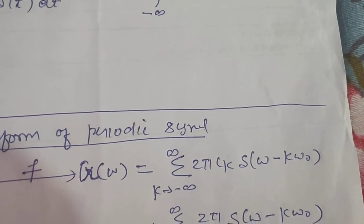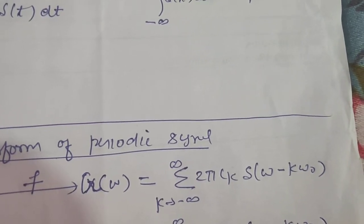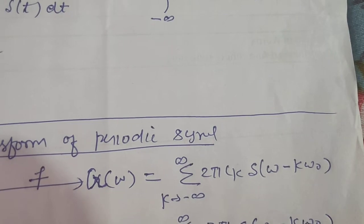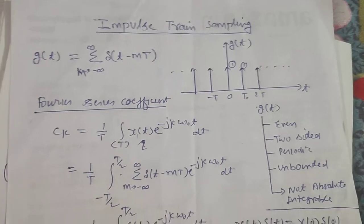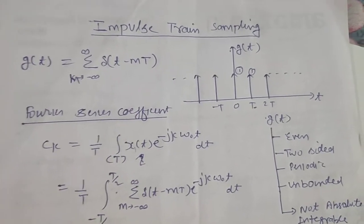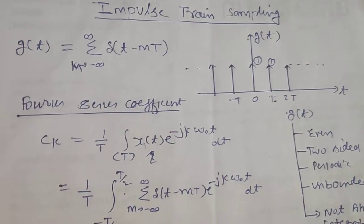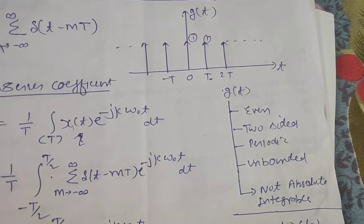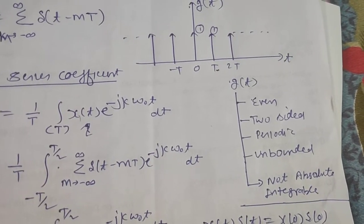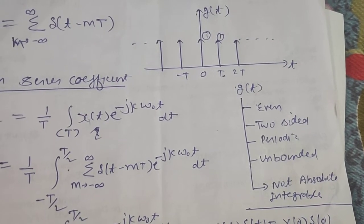Here c_k is the Fourier series coefficient of the impulse train, so first let us find it. The impulse train g(t) is an even function. It is a two-sided signal, meaning it starts from minus infinity and ends at plus infinity. It is periodic with time period T.